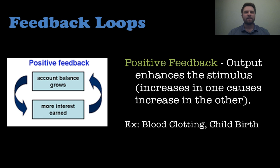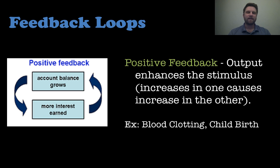Let's talk about feedback loops and how they affect homeostasis. A positive feedback loop is when the output enhances the stimulus — an increase in one thing causes an increase in another. Examples include blood clotting and the process of childbirth. The graphic shows a bank account that earns interest: as the account balance grows, you get more interest, and as you get more interest, your account balance grows, which in turn causes more interest. So one increases and the other increases along with it.